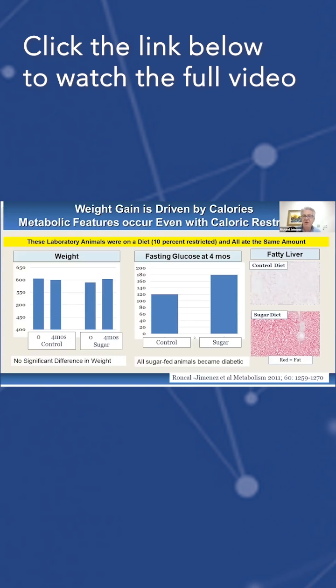So the animals on the high sugar diet, even though they were on a caloric restriction, they became diabetic. They developed fatty livers, shown by the red stain.